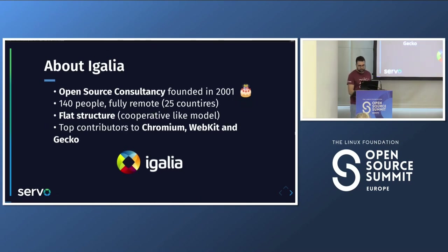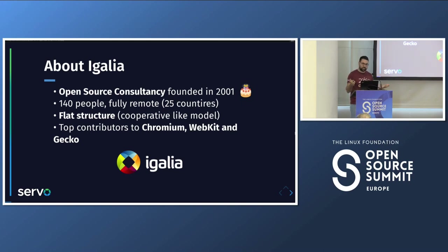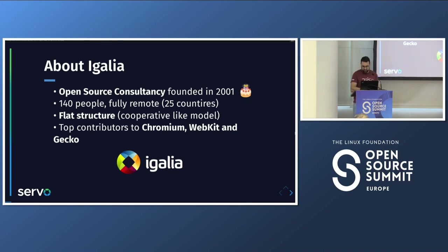I work at Igalia. Igalia is an open source consultancy founded in 2001, and actually today is our anniversary — we are 22 years old today, just a coincidence. We are about 140 people from all around the globe, fully remote. We have a flat cooperative-like structure, and we are among the top contributors to Chromium and WebKit after Google and Apple, and in the top contributors to Gecko. That means Servo is also something we care about — we were contributing to Servo in the past and now we are taking over the project maintenance. Igalia also contributes to many open source projects like the kernel, GStreamer, MESA drivers, and many other things.